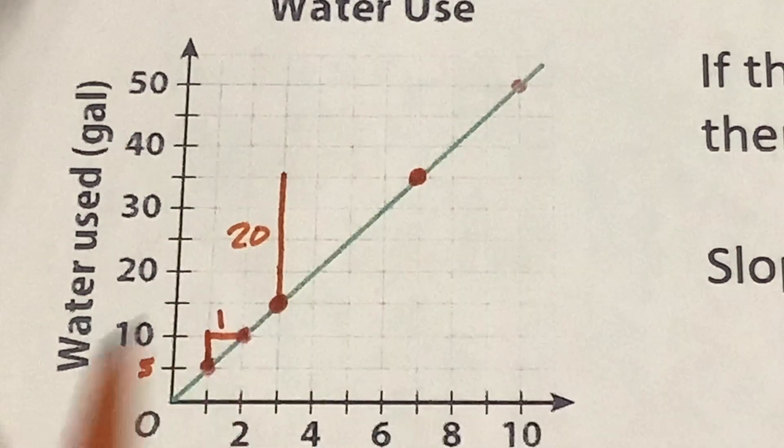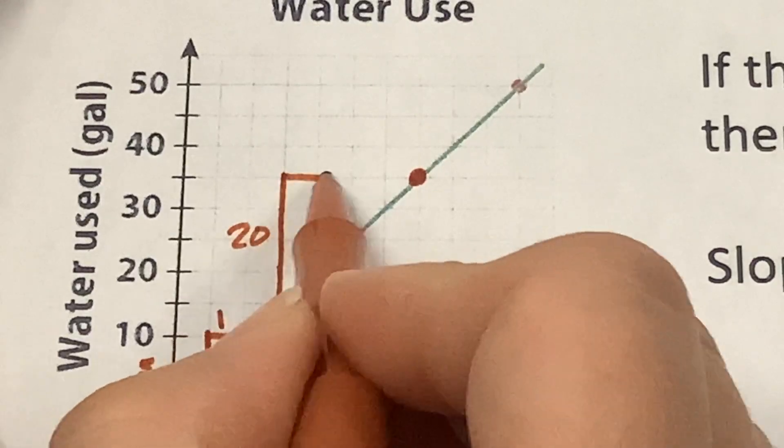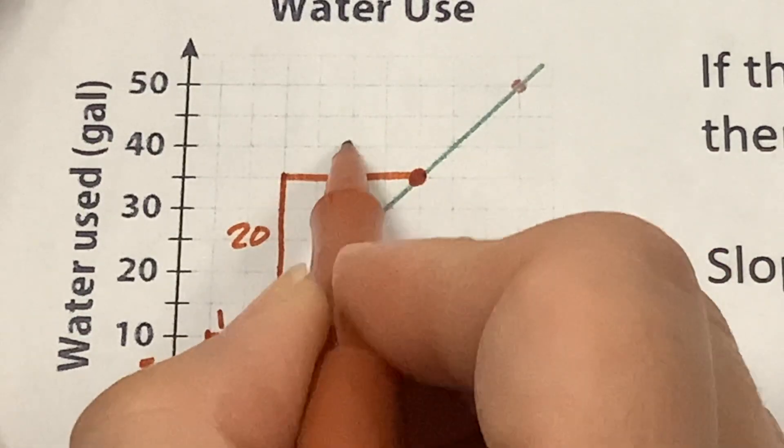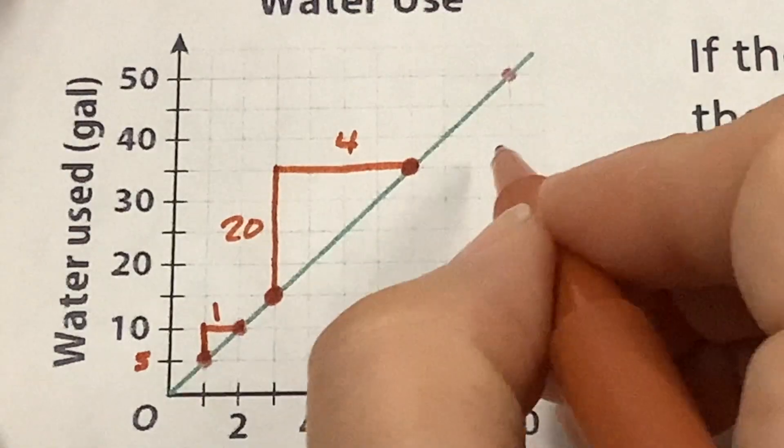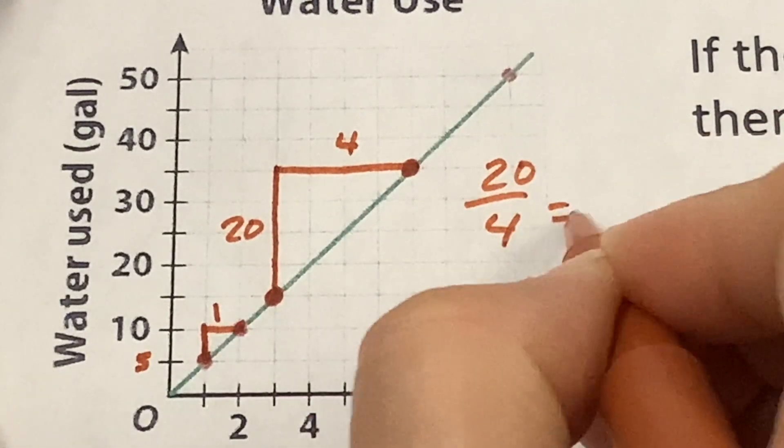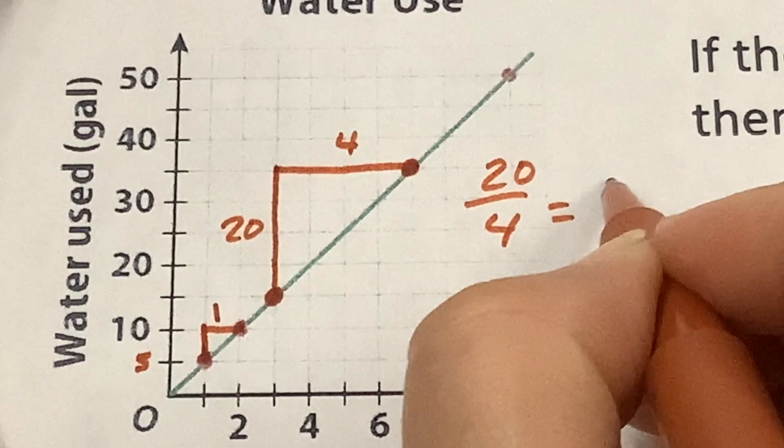Which is 20. And then it goes over one, two, three, four. Well, that's a rise of 20 and a run of four. But 20 over four is equal to what? Five. Five.